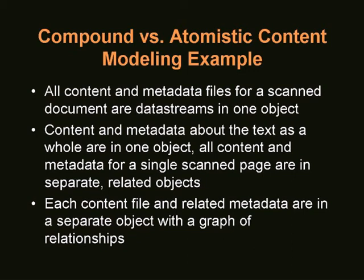The ultimate atomistic example is where every content file is a separate object. Your image objects might have a thumbnail object, screen-sized object, and archival image object all related to the one object representing the original scan, which is then related back to the parent. All these schemes have their uses — it's more art than science to decide. They all have downsides and upsides, and that's something you have to figure out for yourself. But Fedora lets you do it all those different ways.